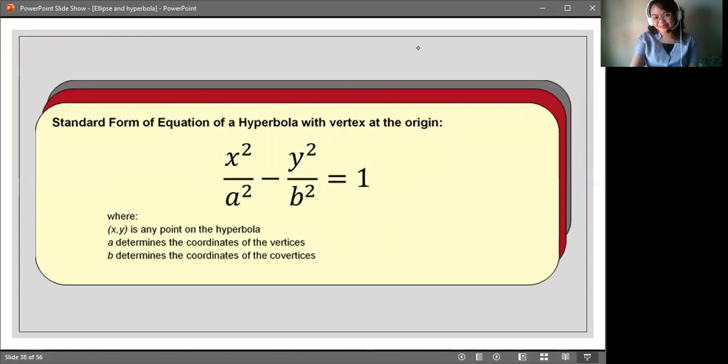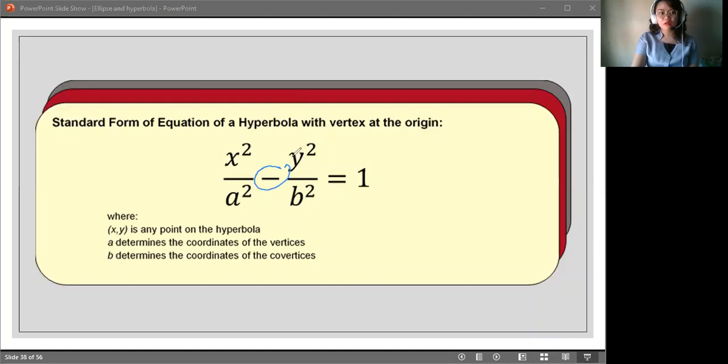And then, for the standard form of equation, just like what I was saying, this is now the difference from the ellipse. Since the definition tells you about the difference, then, the standard form of equation would now utilize a negative sign, a subtraction sign, rather than the plus sign in ellipse.